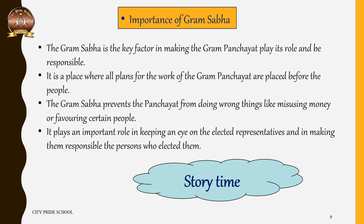The people start suggesting various ways to overcome this problem. One villager suggests piping water from the Suru river and making an overhead tank in the village to increase water supply. Others think that while this is a good suggestion, it might be very expensive, so it would be better to deepen the hand pumps and clean them for the season. But Tija says this is not enough — they need a more permanent solution.